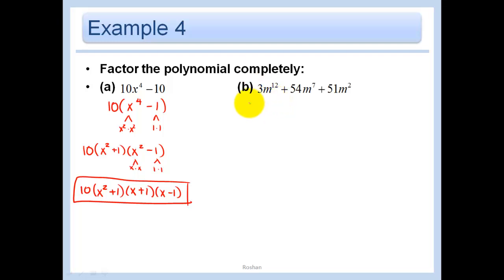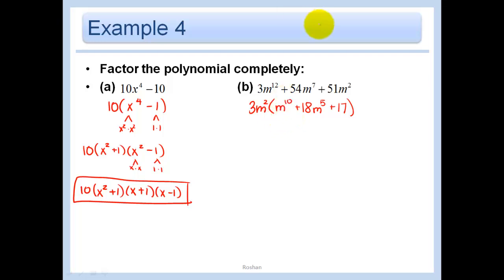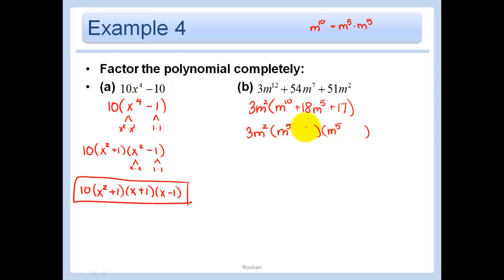Is there anything in common? There's a 3 and an m² in common — factor that out. 3m¹² ÷ 3m² = m¹⁰, plus 54m⁷ ÷ 3m² = 18m⁵, plus 51m² ÷ 3m² = 17. Can I go further? I'm thinking yes, because m¹⁰ = m⁵ · m⁵. Trying m⁵ and m⁵ with 17 and 1 — a plus and a plus makes 18m⁵. So that's my answer.